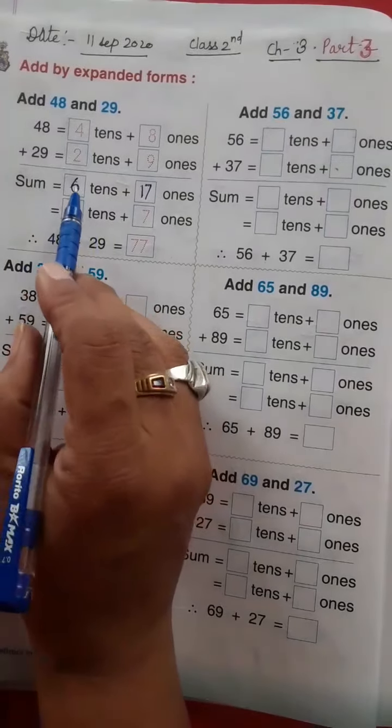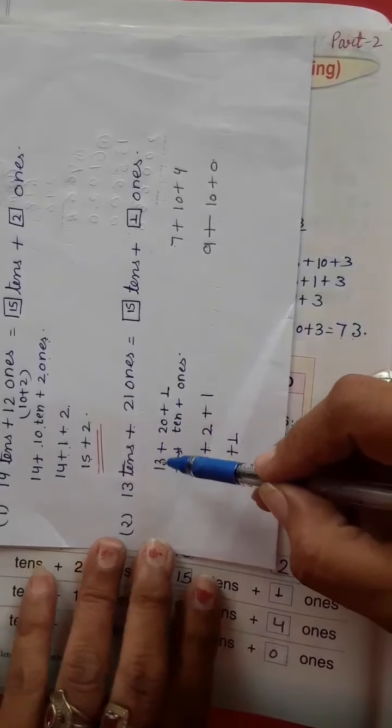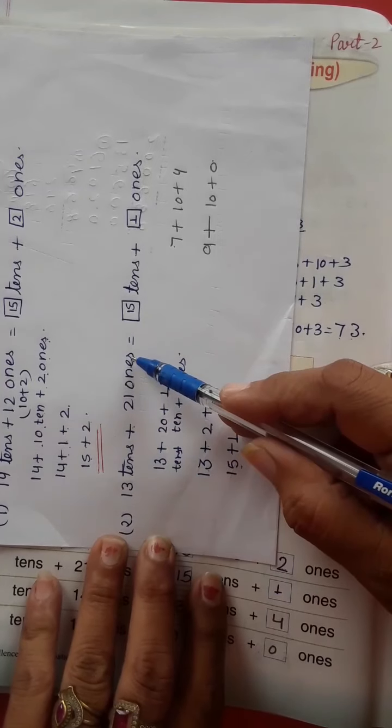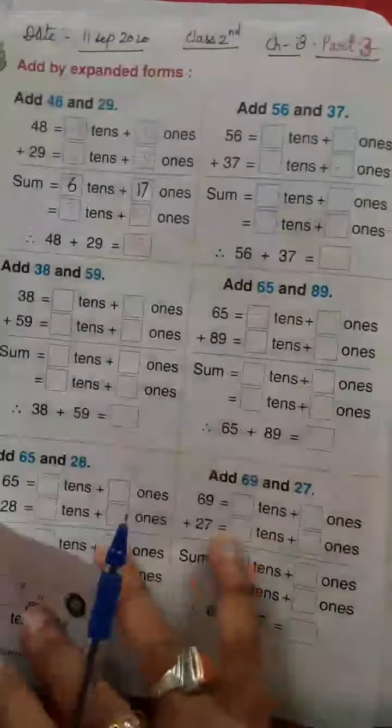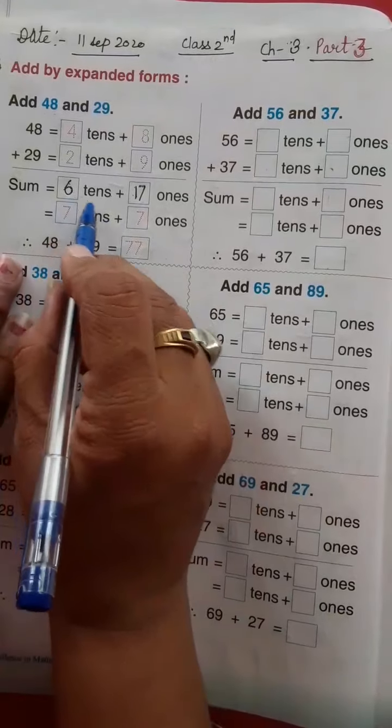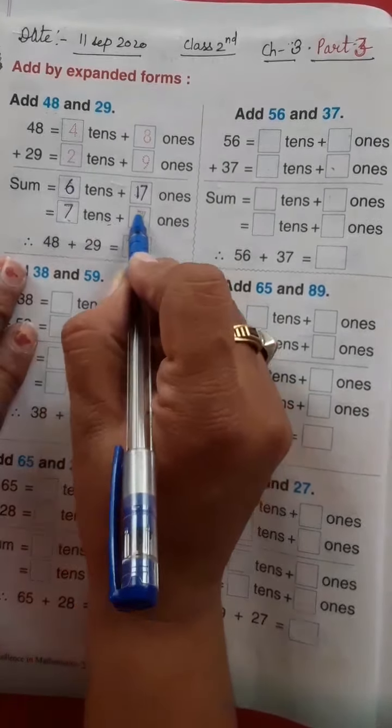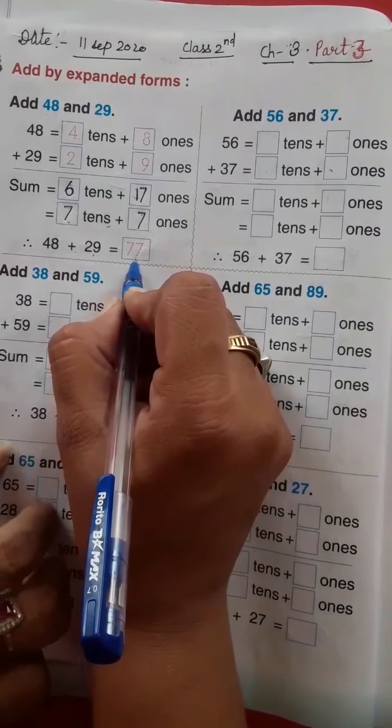Agar hum isko expand me karenge toh hum ye karenge ki 6 plus 1. Jaise humne pichli baar ye sum solve kiya tha. 13 plus 20 plus 1. Ones ka toh 15 plus 21 karke isko humne solve karke, waisa hi karenge. 6 me 1 plus karenge toh 7 aa jayega tens ki jagah aur ones ki jagah 7. Toh 48 plus 29 hota hai 77.